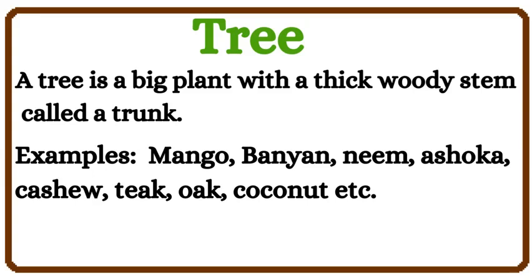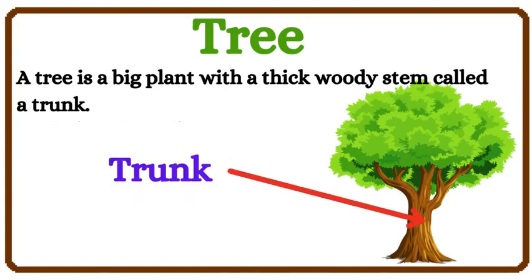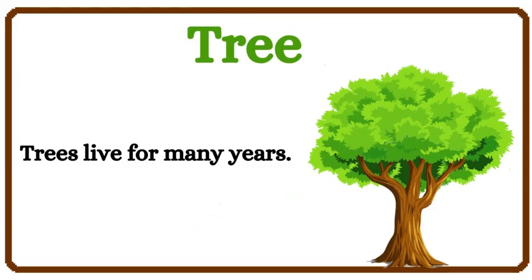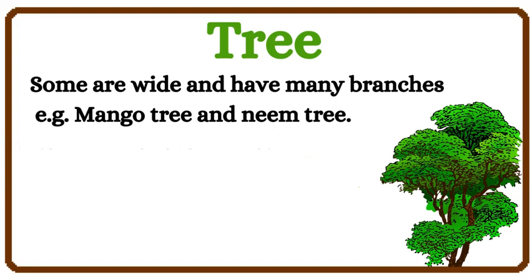Banyan, Neem, Ashoka, Cashew, Teak, Oak, Coconut, etc. Their branches and leaves grow to form a huge bush called a crown. Trees live for many years. Some are wide and have many branches.